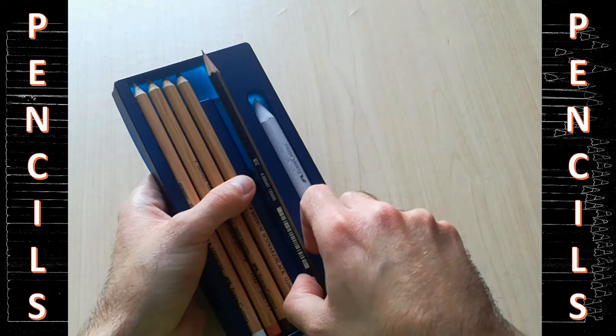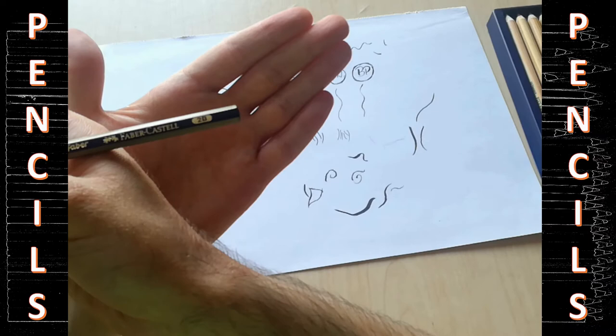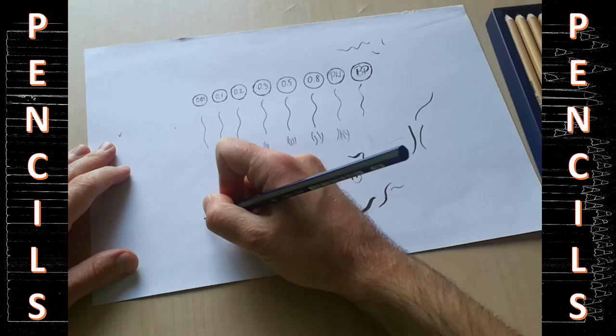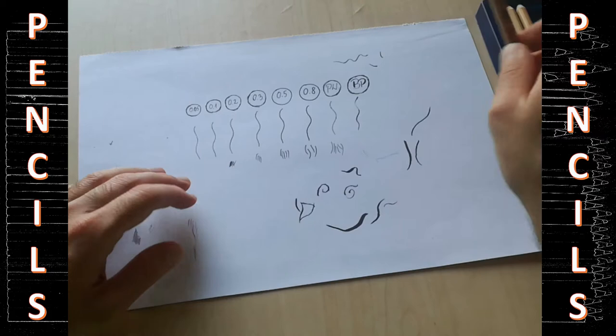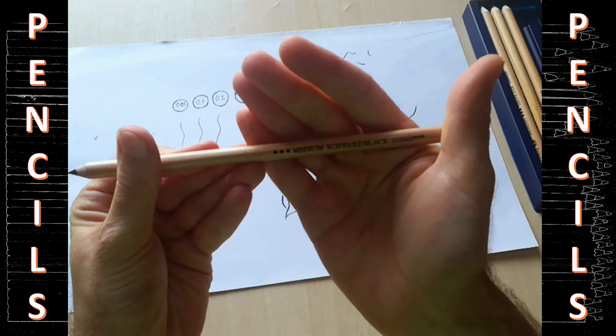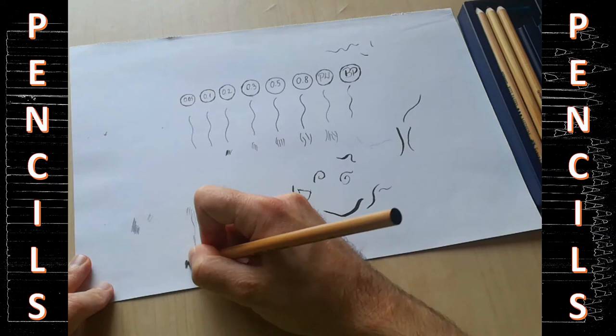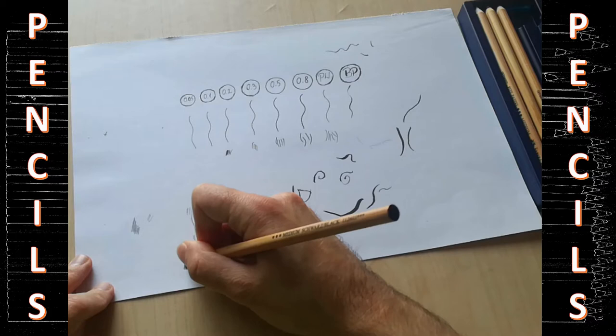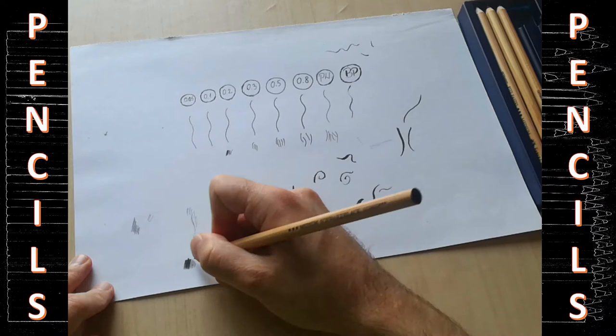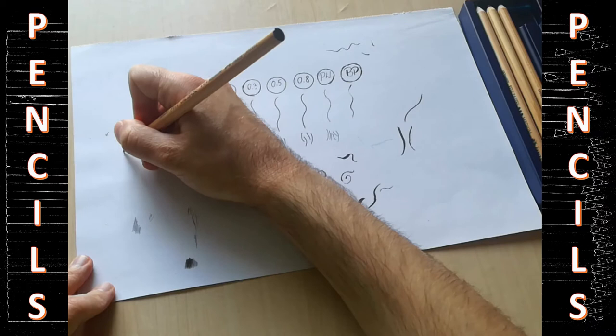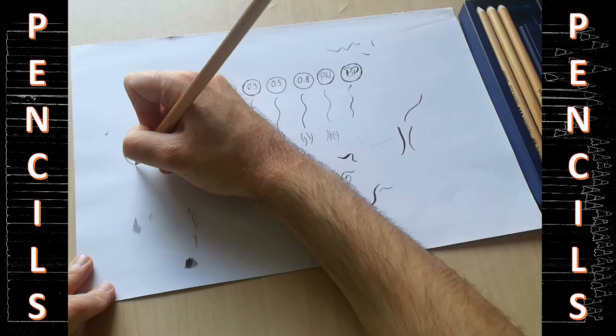And I'm just gonna go ahead and swatch these as well. So first of all, we have the Faber-Castell 2B graphite pencil. It's just a normal 2B graphite pencil. Then we have the Pitt oil-based pencil in the color black. It smudges a bit, but not too much.